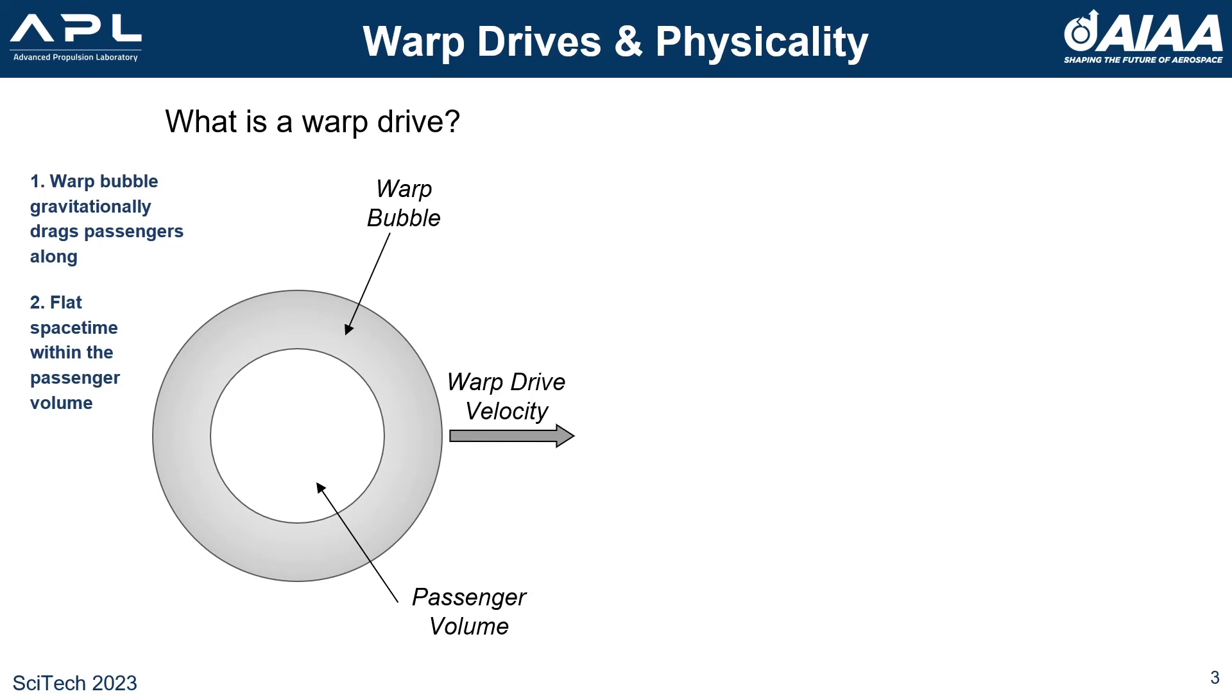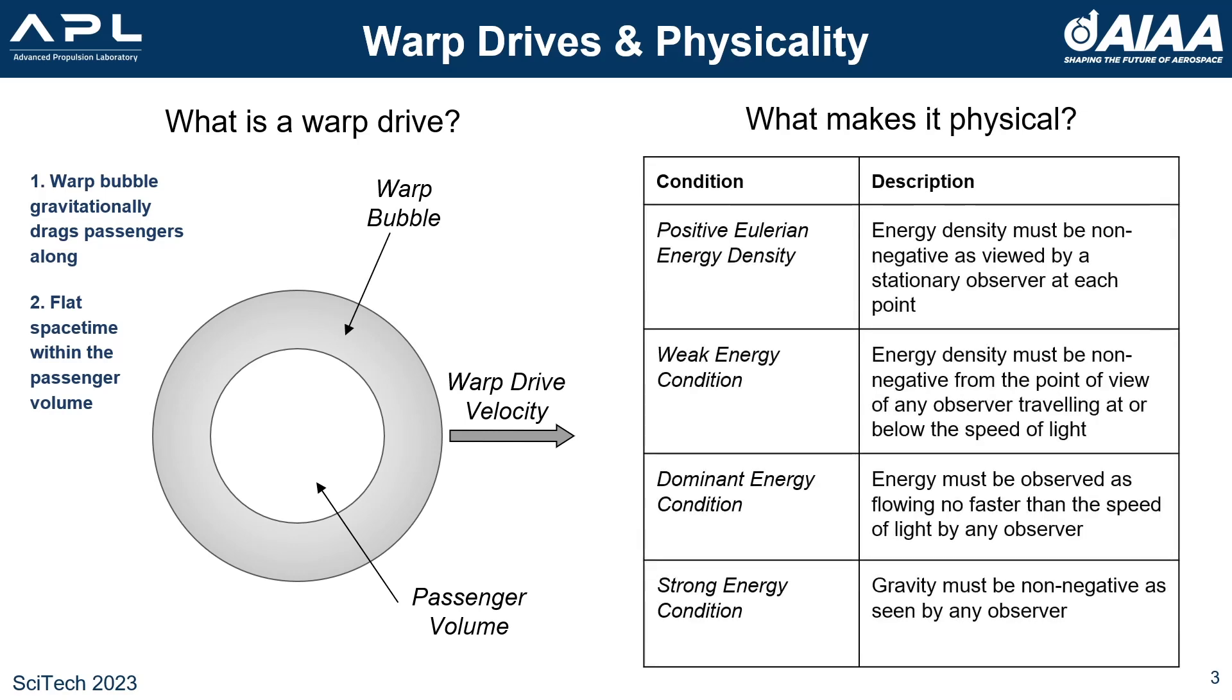These bubbles could potentially move at very high velocities allowing for fast interstellar travel. However, to date, all proposals for warp drives have had unphysical qualities, for example, having regions of negative energy density. We describe physicality in terms of energy conditions, which are constraints on how energy behaves as seen by different observers. In this presentation, we'll focus on the Eulerian energy density and the weak energy condition.